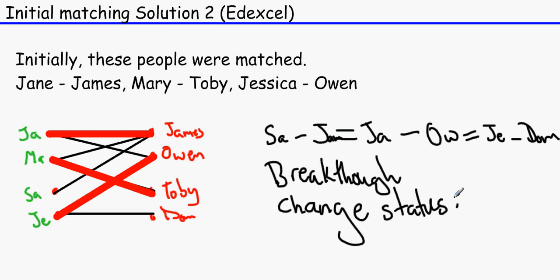And what happens is that the one line becomes two and two line becomes one. So it would be SA initial matching to JAM to JA to OW to JE to DOM. And there you have it. I mean, you might be thinking, what happened to Mary and Toby? But if you think about it, it's already there. It did not need to be altered.